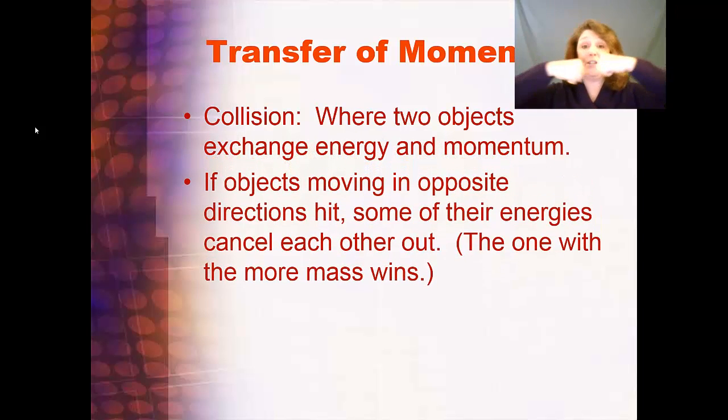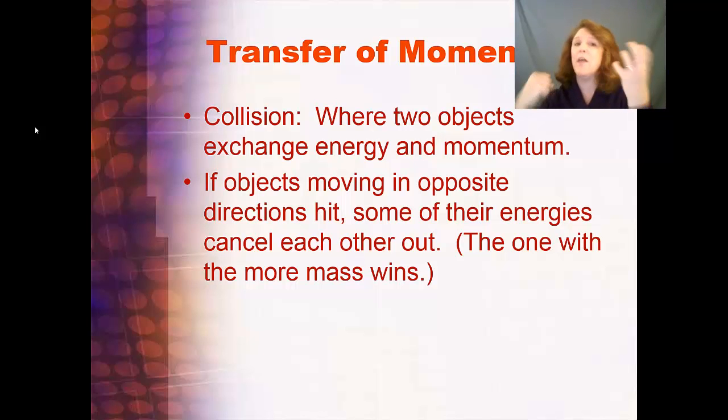If objects moving in opposite directions hit, some of the energies cancel each other out. But the one with the more mass wins. Or the more speed, depending, because momentum is mass plus speed. So, if you've got two little cars and they're about the same size, and this one's going a lot faster than this one. This one, when they hit, they're going to kind of travel in the direction where there was more energy. And this guy had more energy, because he had more speed. If this guy is big and this guy is small, and they're going in the same speed when they hit, they're going to move a little bit this way, because this guy had more energy and that was in mass. So, you've got to kind of take both into account.